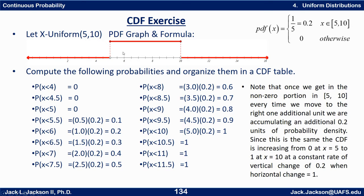So one-half times 0.2 is 0.1, so we pick up an area of 0.1. Going to the right another half we pick up another 0.1, coming up to 0.2. Going from five to six — one unit wide — we pick up an area of 0.2. From six to seven we pick up another one-fifth, going up to 0.4. From seven to eight adds another 0.2, going to 0.6. Eight to nine adds to 0.8, and nine to ten adds the final 0.2 up to one.